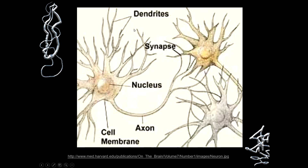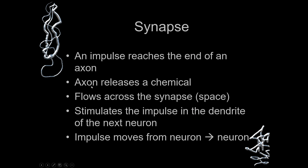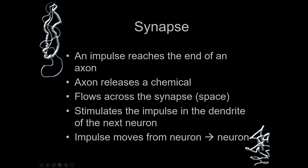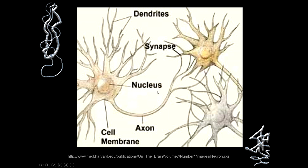An impulse reaches the end of an axon. After reaching the end of the axon, the axon releases the chemical. This axon releases the chemical, and after releasing it, it flows across the synapse and stimulates the impulse in the dendrite of the next neuron. From here it reaches the dendrite — it carries all the way from the axon terminal to the dendrite. That's the whole process of communication within neurons.